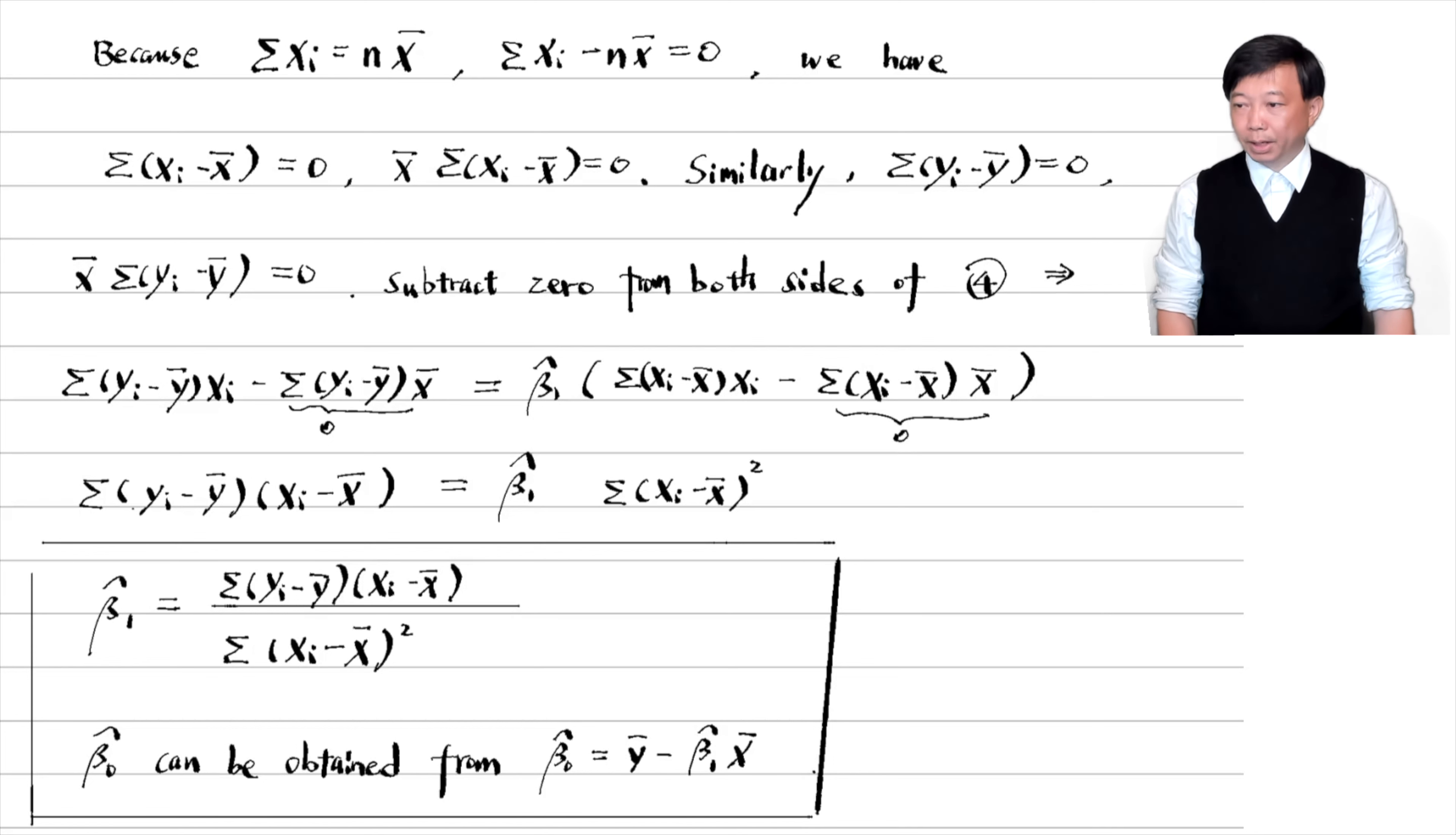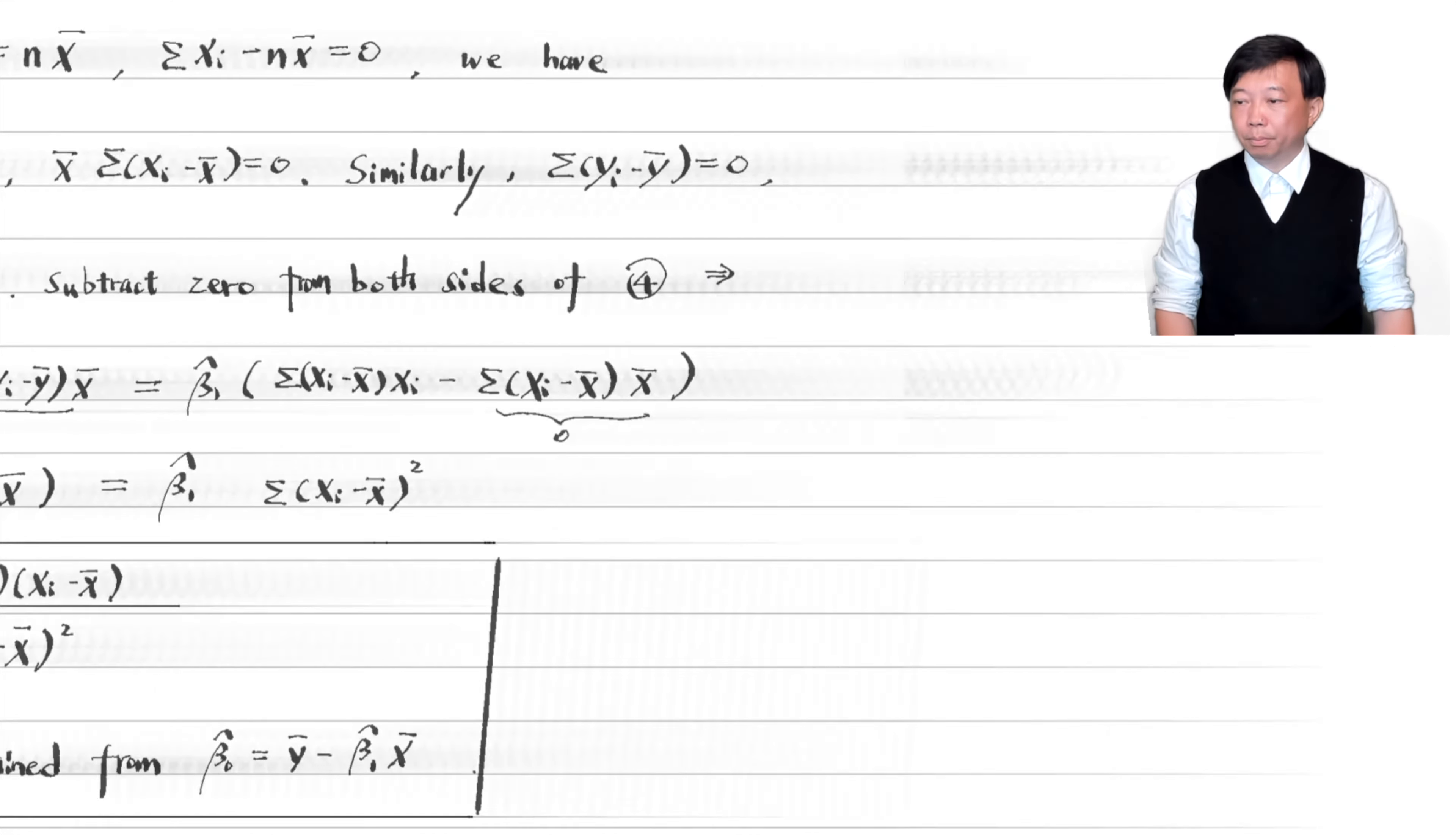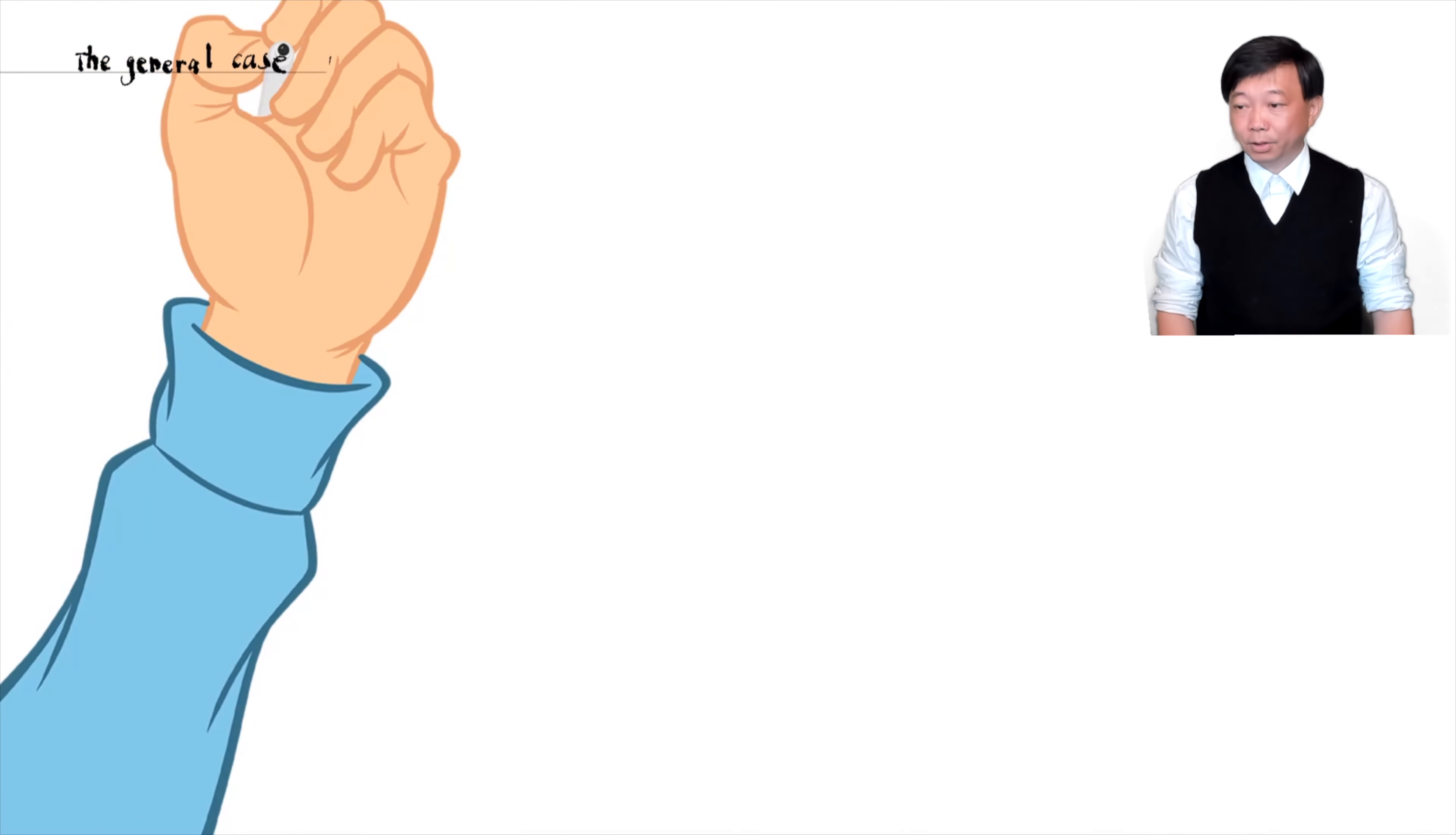In the general case, there are k explanatory variables. We can use matrix notation to solve for the OLS estimator.